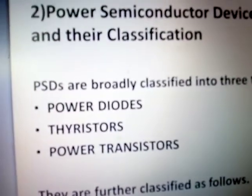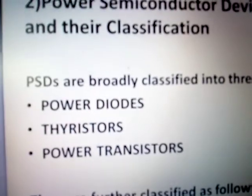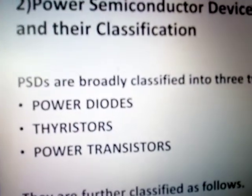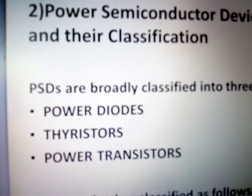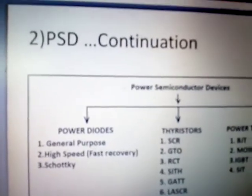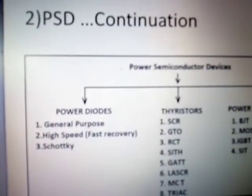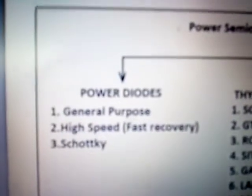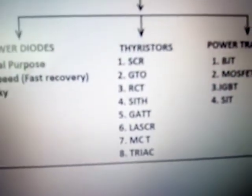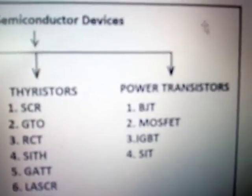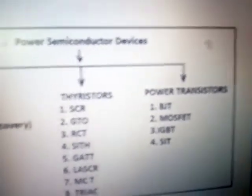Power semiconductor devices are classified mainly as power diodes, power transistors, and thyristors. You already know diodes and transistors, but thyristors you will study in this subject. Power diodes have three types, thyristors have different types, and power transistors again have different types.